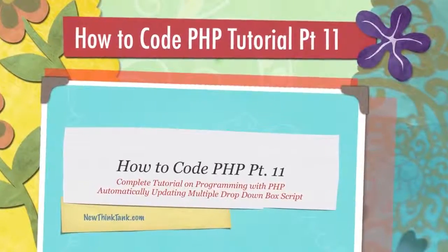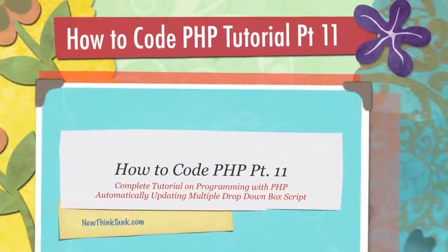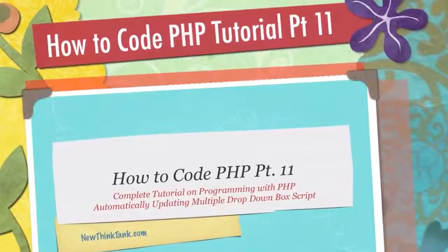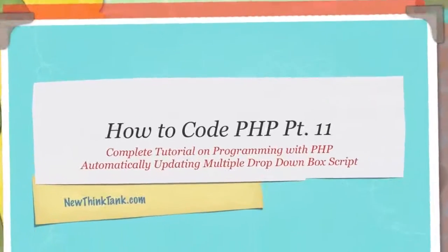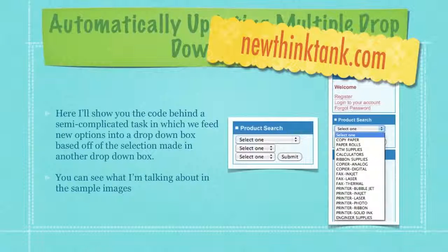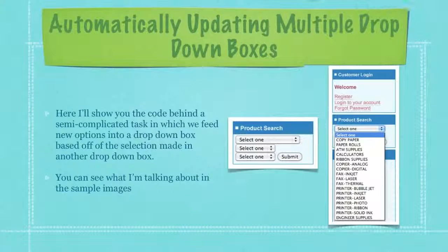Welcome to part 11 of my how to code PHP tutorial. Today I'm going to show you how to create automatically updating multiple drop-down boxes and go completely through everything that goes into it. It sounds kind of confusing but it's really not and it's actually quite useful. Here I'll show you the code behind a semi-complicated task in which we feed new options into a drop-down box based off the selection made in another drop-down box.